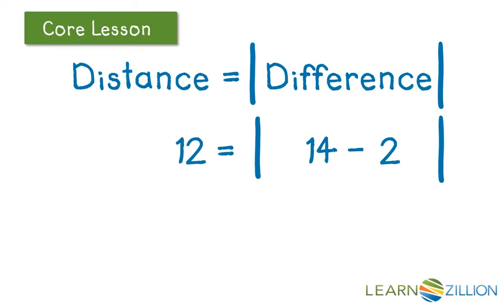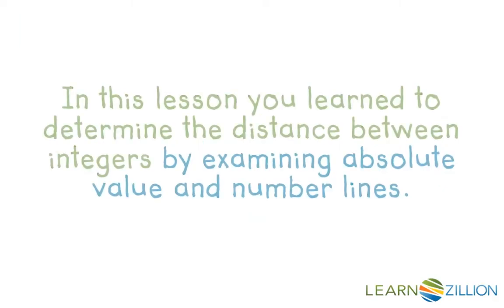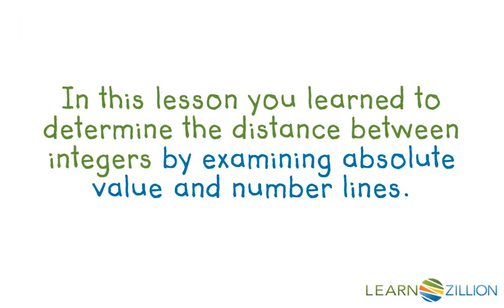For example, 14 and 2: if we subtract, we get 12. But 2 minus 14 is negative 12. So the difference can be positive or negative, but the distance between them is always positive. In this lesson, you learned to determine the distance between integers by examining absolute value and number lines.